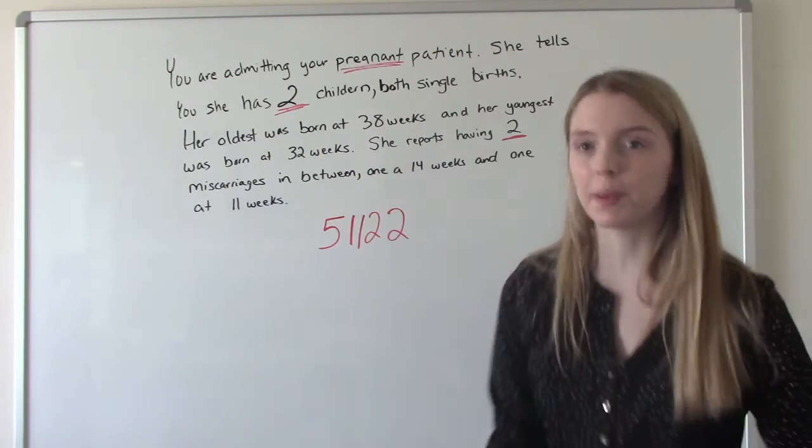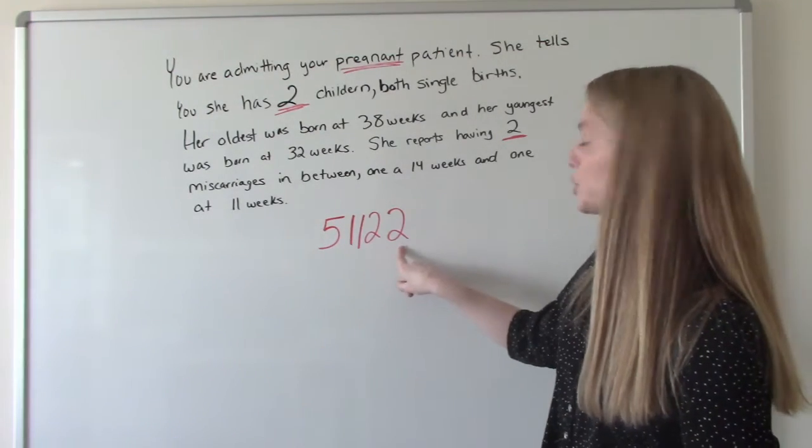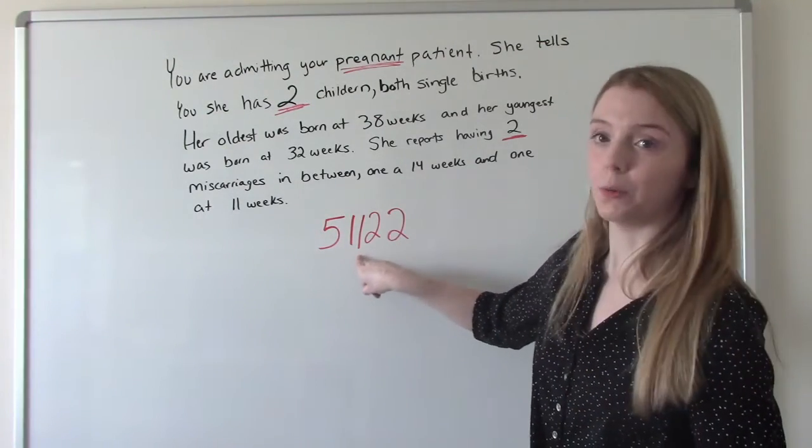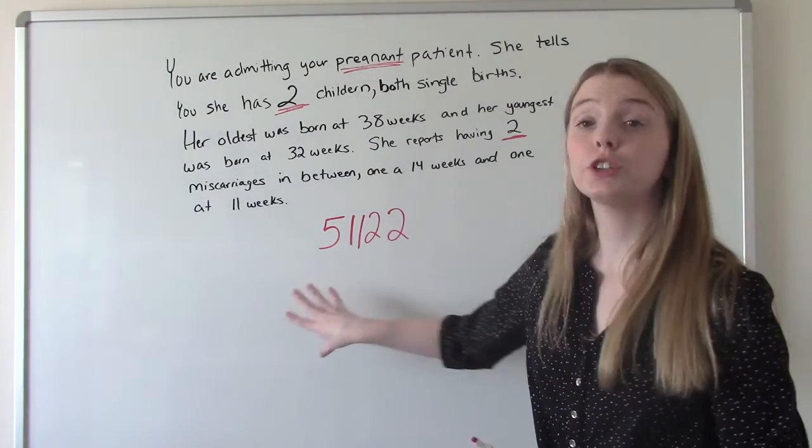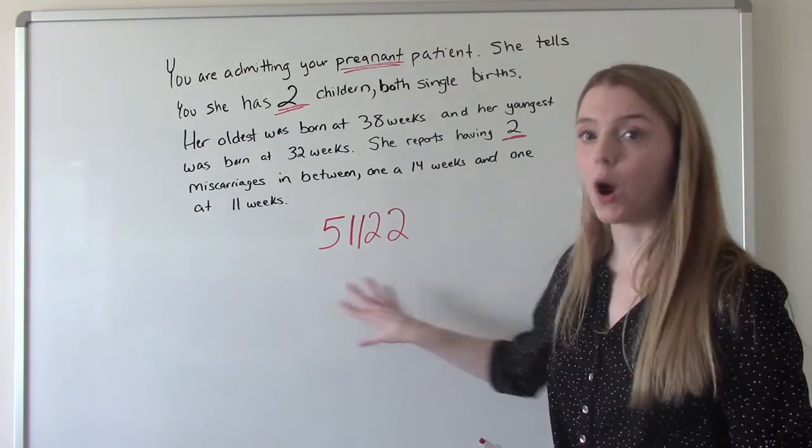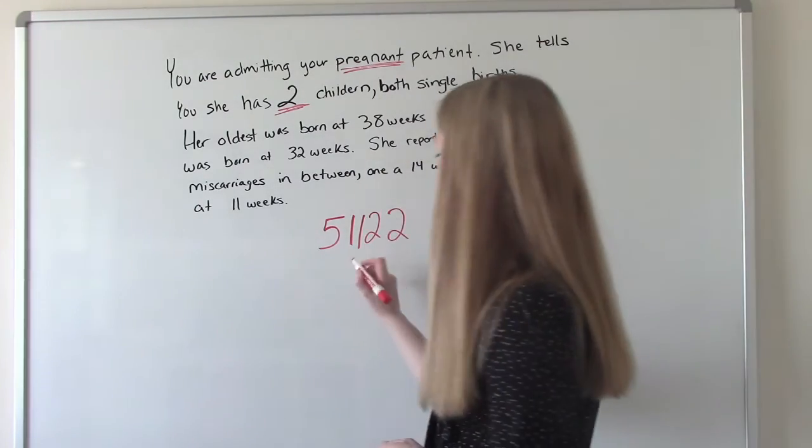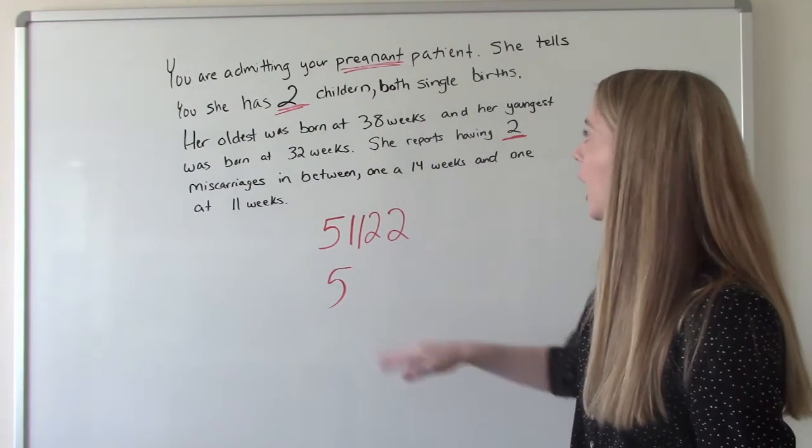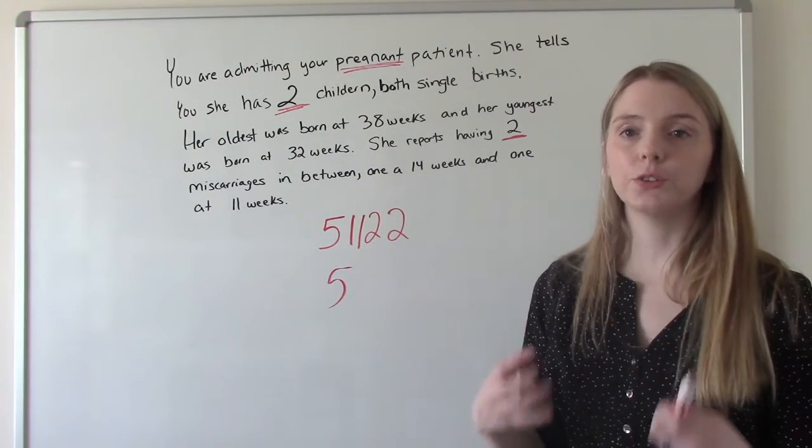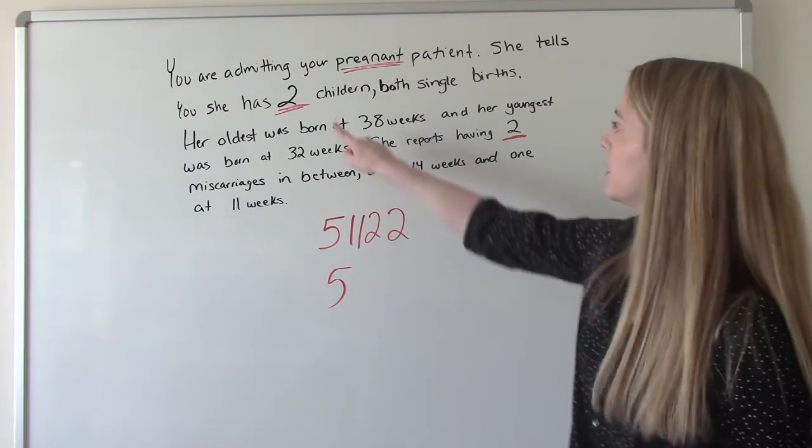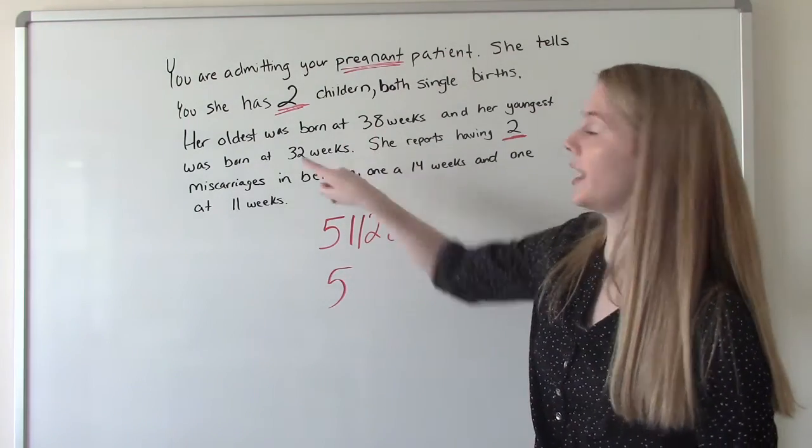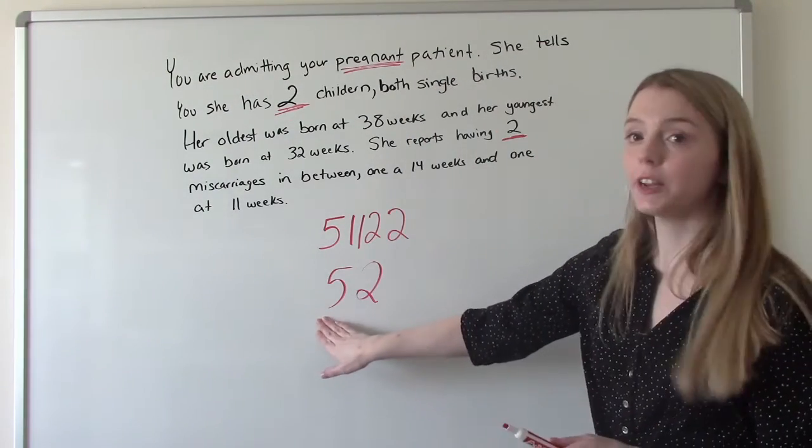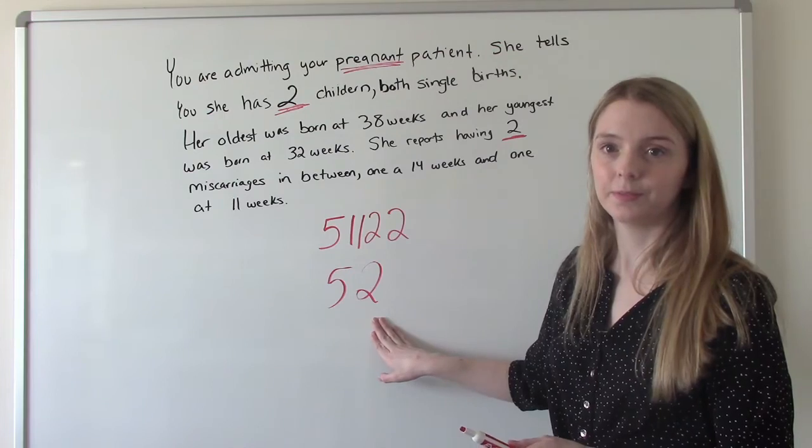So that's her GTPAL. And then once she delivers this baby, this number will turn to a three. And then depending on how far along she is at this appointment, one of these will change to a two. So what's her GP? Now our gravida para. So our gravida again is five. That hasn't changed. And then our parity. So how many births has she given to live children over 20 weeks? Just the two, the 38 and the 32 weeker. So in this case, she's a G5P2.